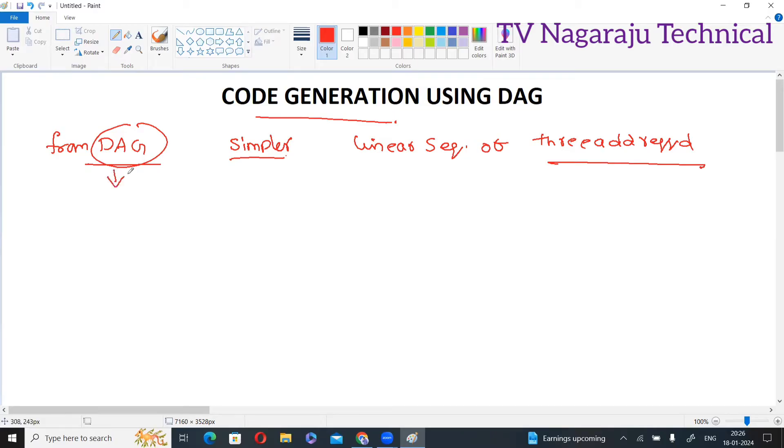Simply by using DAG we are rearranging some sequence of instructions and generate an efficient code. Now remember, the order of three address statements affects the cost of the object code. The order in which the statements are executed is very important. Based on the order, the cost of object code may vary.